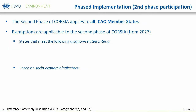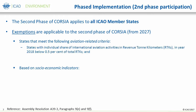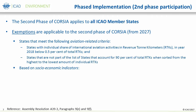Unlike the voluntary participation of states in the pilot and first phases from 2021 to 2026, the second phase of CORSIA applies to all member states, with two noted categories to which exemptions are applicable: aviation-related criteria and socioeconomic indicators. These criteria for the exemption of states from the CORSIA offsetting requirements in the second phase are defined in A39-3, paragraph 9e. For aviation-related criteria, there are two noted thresholds: states with an individual share of international aviation activities in revenue ton kilometers, or RTKs, in year 2018 below 0.5% of total RTKs, and states that are not part of the list of states that account for 90% of total RTKs when sorted from highest to the lowest amount of individual RTKs.